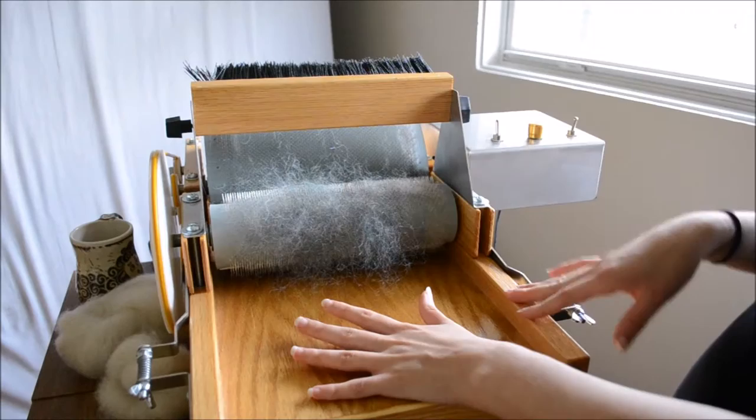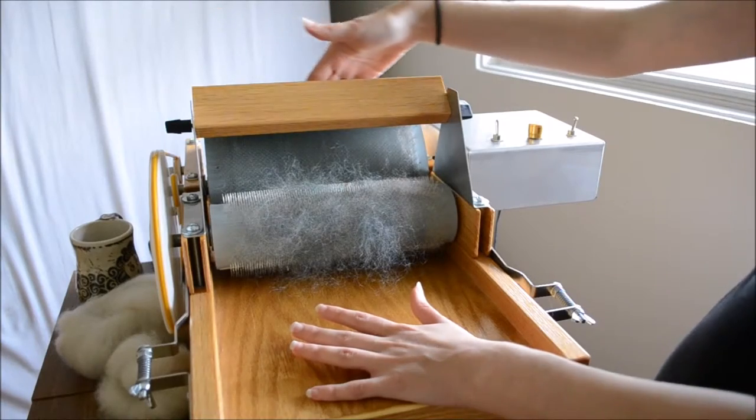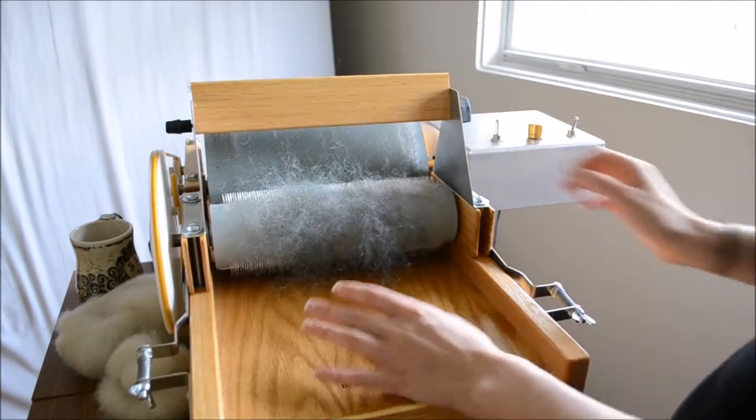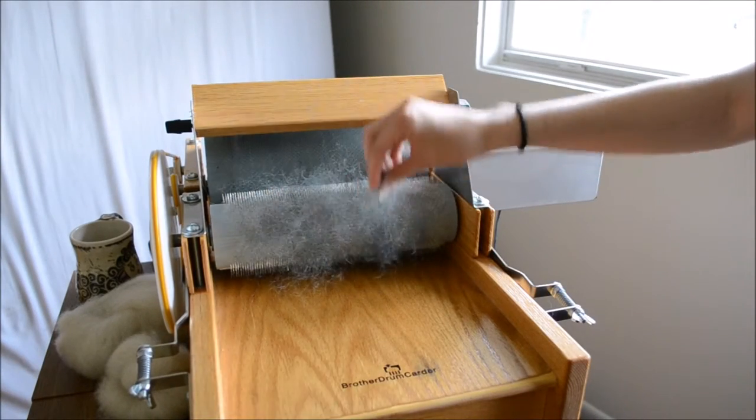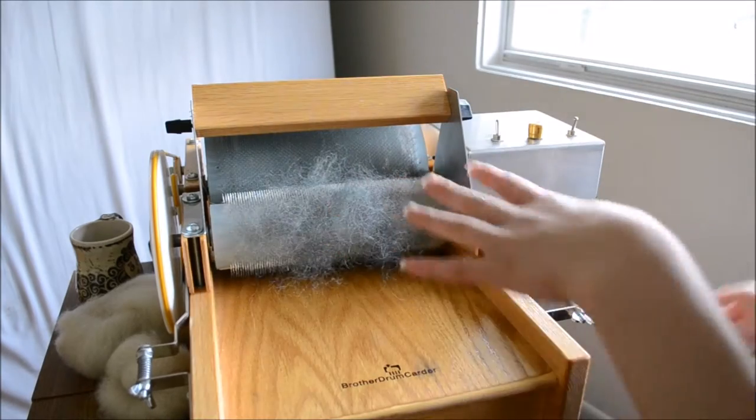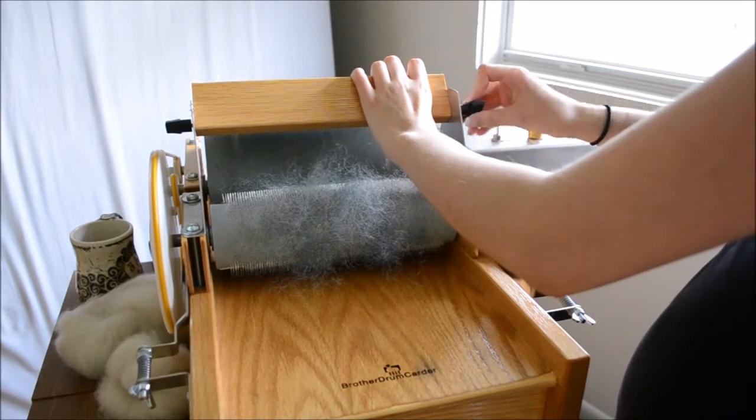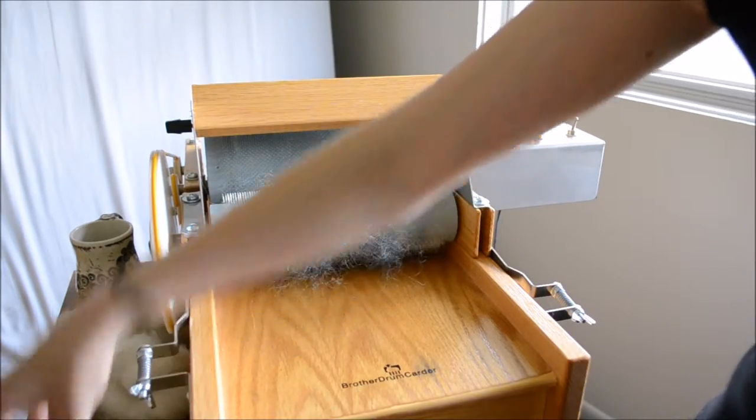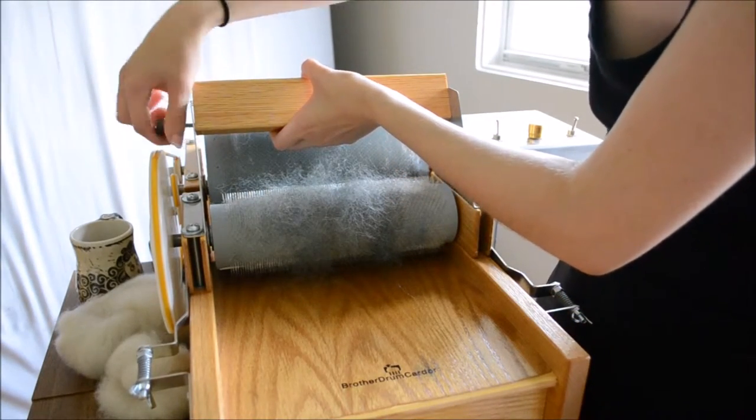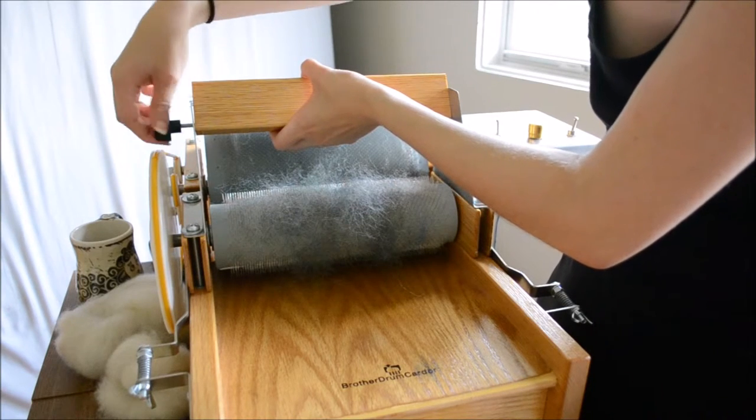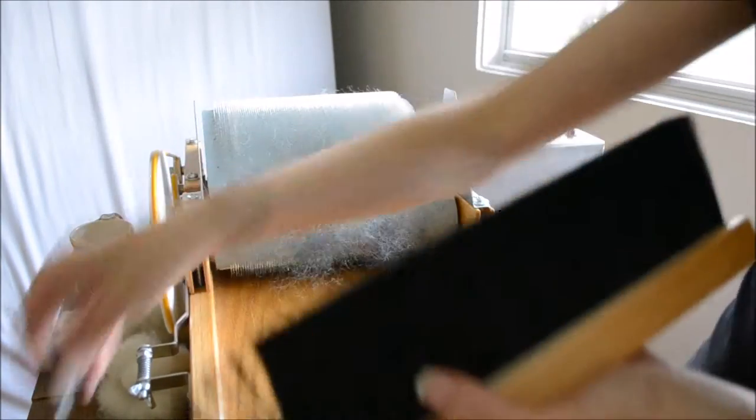Now, the first thing I wanted to talk about is this brush. You can tilt it down so as you're carding it smooths that fiber out, but it also comes off. I especially like it to come off when you're trying to clean it. I've left the drum really dirty so you can see how this works. This feature makes the Little Brother extremely versatile.